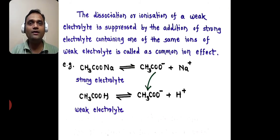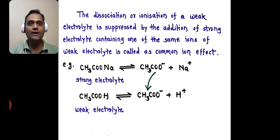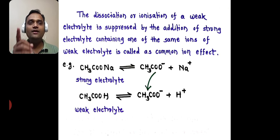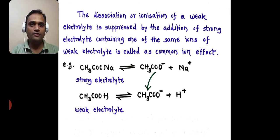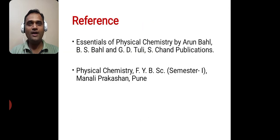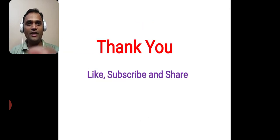The dissociation or ionization of a weak electrolyte is suppressed by the addition of a strong electrolyte containing one of the same ions of the weak electrolyte — this is called the common ion effect. This is all about the common ion effect. Thank you.